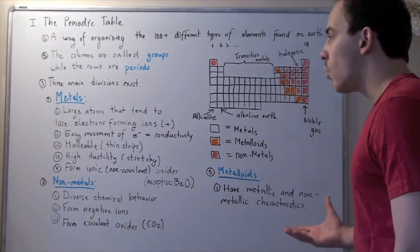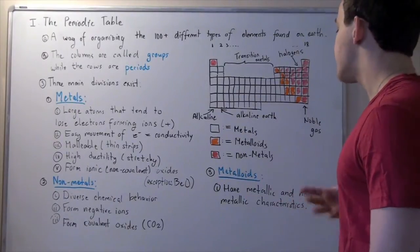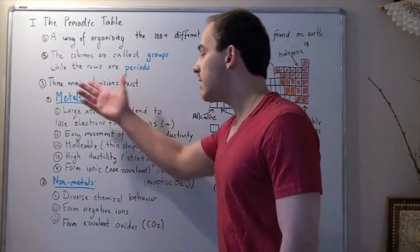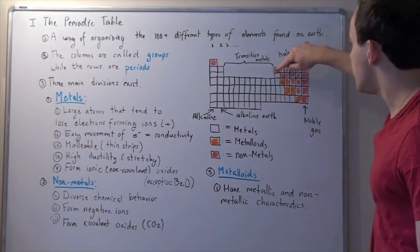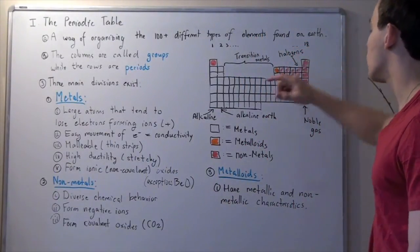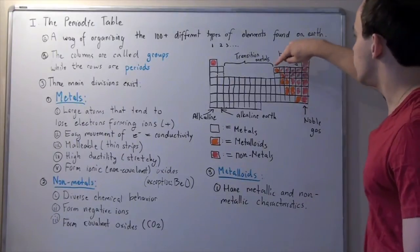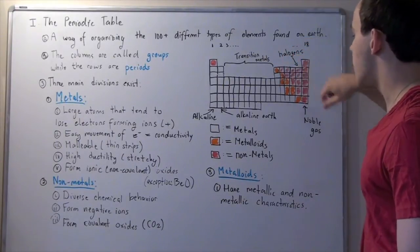Now let's look at the third type division, called the metalloids. Metalloids are interesting in that they have characteristics of both metals and non-metals. And these guys are found right here in the middle of our periodic table, or more towards the mid-right. The orange guys are the metalloids.